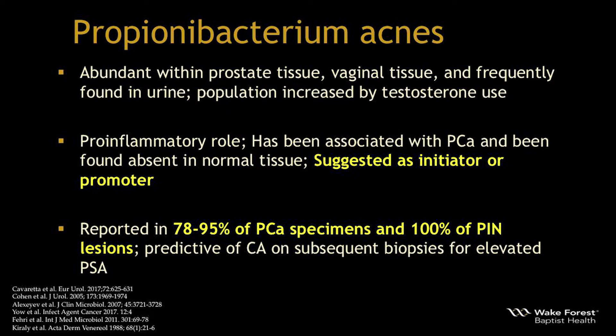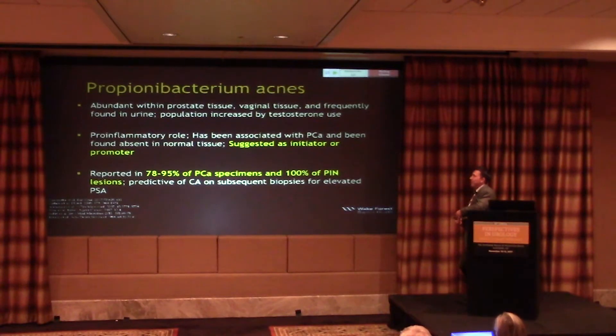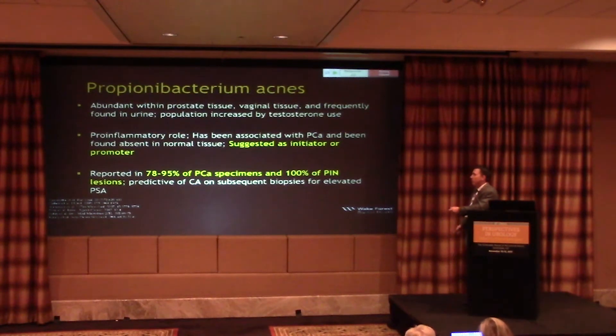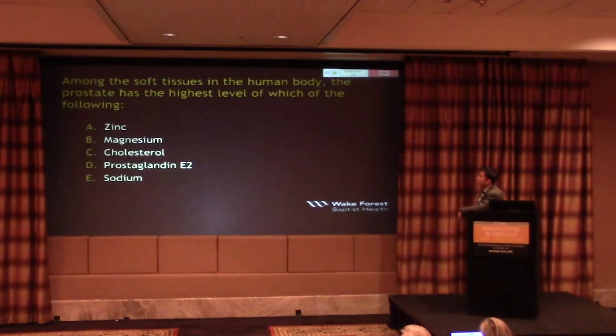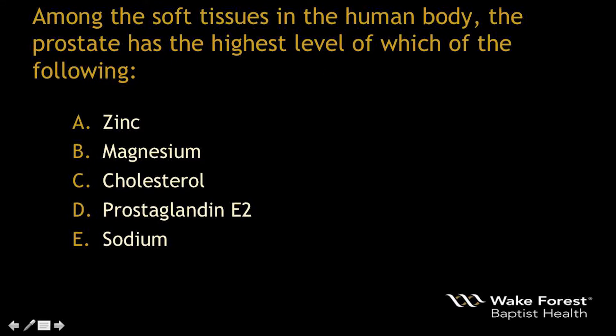Analysis of radical prostatectomy specimens has shown over 70 percent contain an enterobacter species. Propionibacterium acnes (P. acnes) is abundant within prostate tissue, also abundant within vaginal tissue and frequently found in urine. Its population is increased by testosterone. It has a pro-inflammatory role and has been associated with prostate cancer, found absent in normal tissue. It has been suggested as both an initiator and a promoter for disease, reported in 78 to 95 percent of prostate cancer specimens and 100 percent of PIN lesions predictive of cancer on subsequent biopsies for elevated PSA.